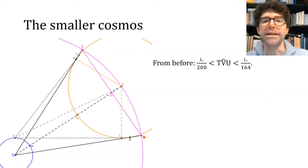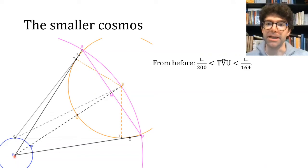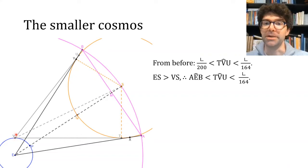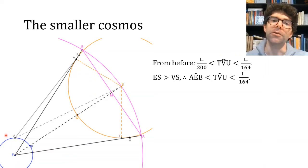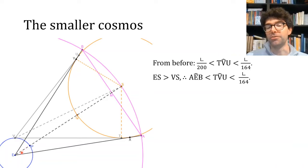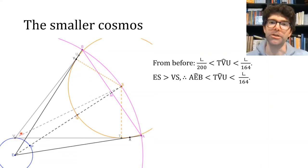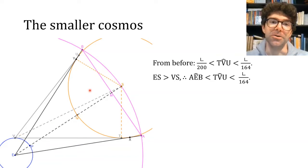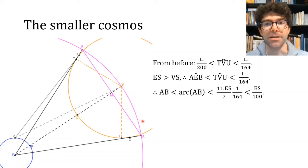Since we're considering a viewer observing the sunrise, E is further from S than V is — VT is tangent to both circles, so the horizontal distance from S to V and E is the same, while the vertical distance to E is clearly greater. So the angular diameter of the sun viewed from E is less than the angle viewed from V; we're further from the sun so it looks smaller. This gives an easy upper bound: AB is less than the arc AB, which is less than 1/164th of a quarter of the purple circle.